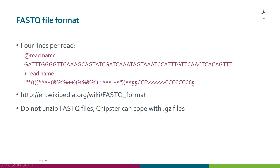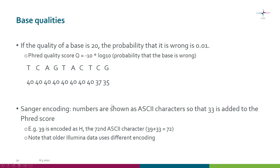Each base has a quality value. These qualities use the PHRED quality scoring system, where the formula takes log10 of the probability that the base is wrong. So if there was a 1 in 100 chance that a base is wrong, log10 of that would be minus 2. We then multiply that number by minus 10, giving us 20 in this example. This way each base gets a PHRED quality score.